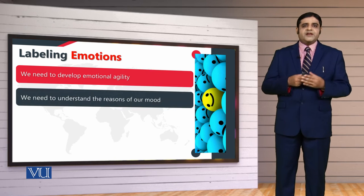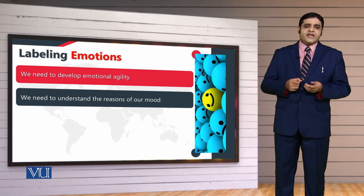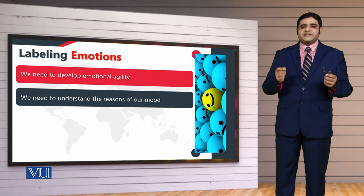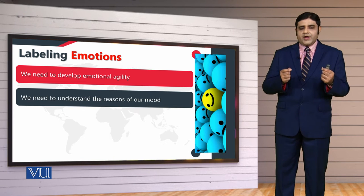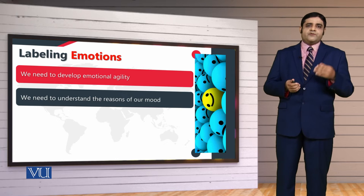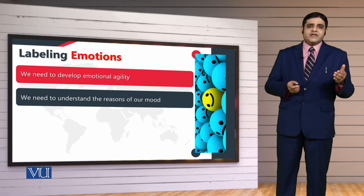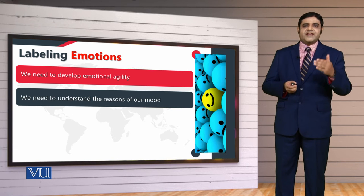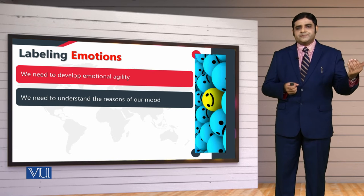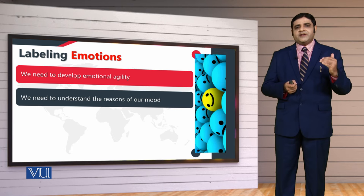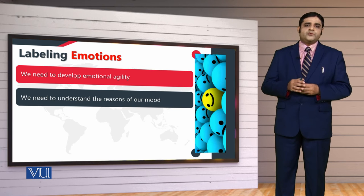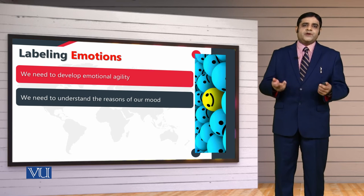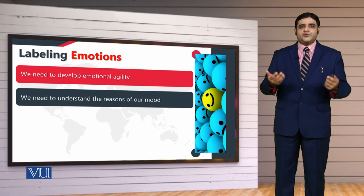The second important thing we need to understand is the reasons — at least we can try to. We can try to figure out what was the thing that bothered us, what is actually troubling us. Because if we don't make any effort, obviously those emotions, feelings and moods are going to cause a lot of harm to our communication and to our relationships.